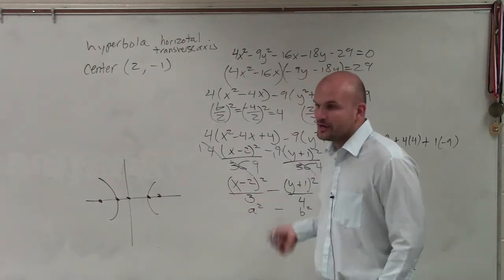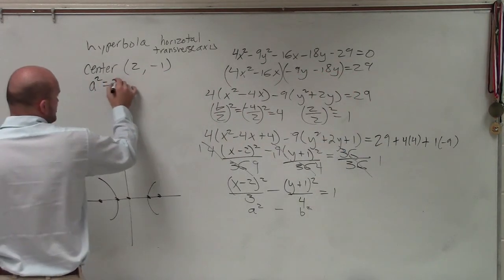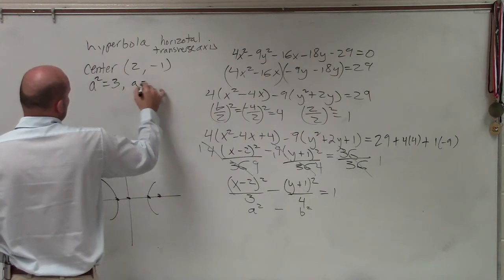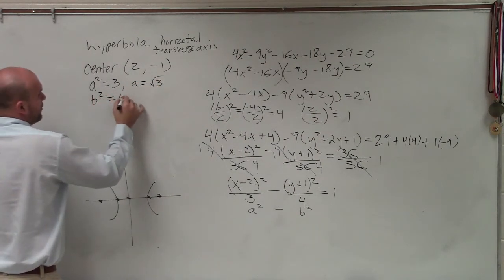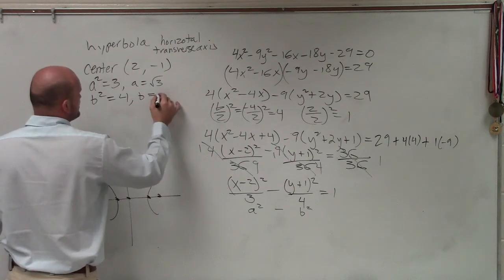So since we already know what a and b are, we can say that a squared equals 9. So therefore, a equals 3. b squared equals 4. So therefore, b equals 2.